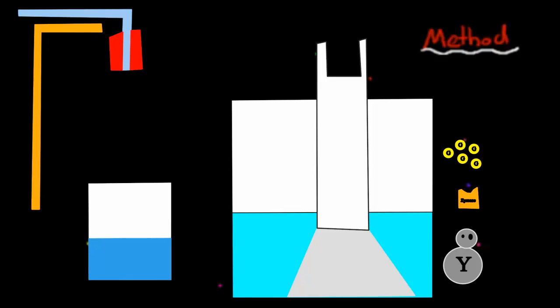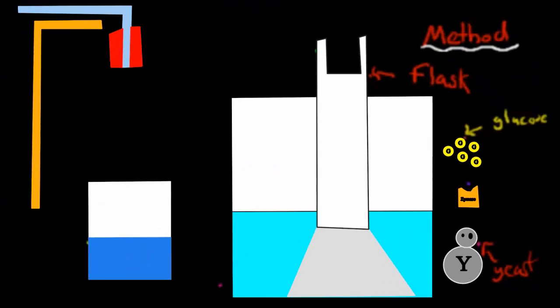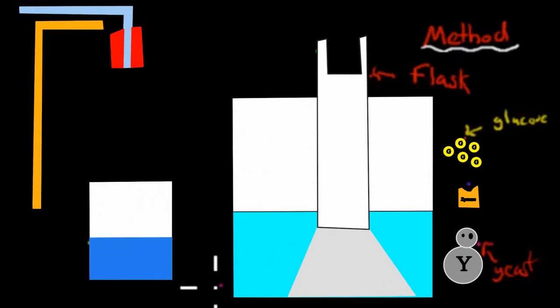Before we start, I want to make sure we label all these things correctly. Right here, we have our flask. We have glucose, these are the glucose solution particles here. We have our yeast on the bottom, that would usually be baker's yeast. We have a warm beaker with water here, about 37 degrees Celsius. And we have our lime water right there.